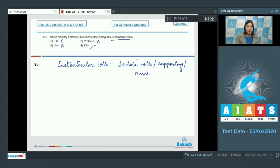Number 4. FSH is the correct option as FSH is follicle stimulating hormone. It stimulates the Sertoli cells which are present within the seminiferous tubules. So, the correct answer is option number 4.